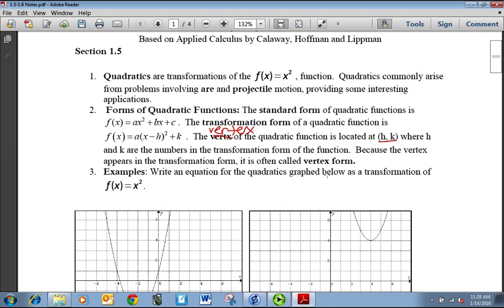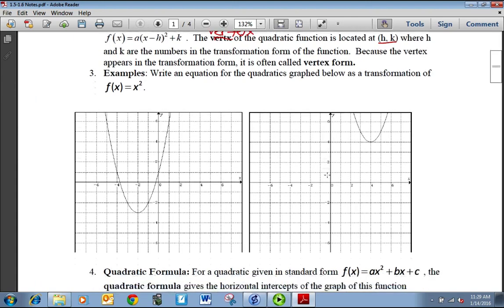So we want to write an equation for the quadratics graph below as a transformation of f(x) = x². Typically in regular x squared your vertex is at (0,0). This one has gone down three and over to the left by two. Any left or right change is going to be in parentheses, and since it's gone to the left it's actually going to be plus, so x plus 2 squared, and the drop down will be the minus 3.